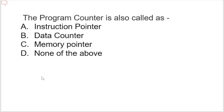Next question: the program counter is also called as — options are instruction pointer, data counter, memory pointer, none of the above. The answer is A, instruction pointer. The program counter is also called instruction pointer or instruction address register, and it contains the memory address of the location of the next instruction.